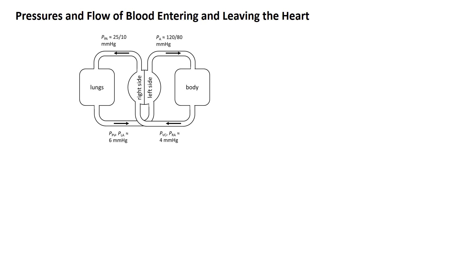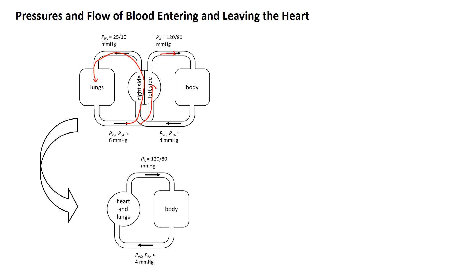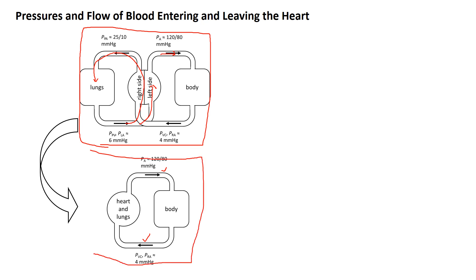The left side of the heart pumps blood out to the body; blood returns to the right side of the heart where it's pumped to the lungs, and blood returns from the lungs to the left side. We're going to further simplify this schematic by lumping together the heart and lungs into one system. In this view, blood is pumped from the left side of the heart to the body, returns to the heart and lungs, and is pumped out again. This lumps the heart and lungs as one system and the systemic vasculature as the other.